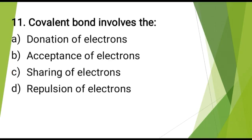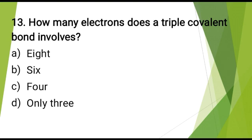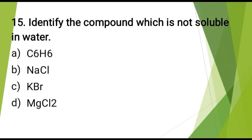Covalent bond involves? The correct answer is: sharing of electrons. How many covalent bonds does C₂H₂ molecule have? The correct answer is: 5. How many electrons does a triple covalent bond involve? The correct answer is: 6. Which pair of molecules has the same type of covalent bonds? The correct answer is: O₂ and N₂. Identify the compound which is not soluble in water? The correct answer is: C₆H₆.